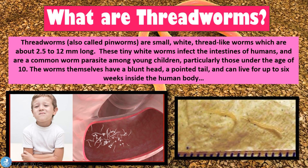So what are threadworms? Threadworms, which are also commonly known as pinworms, are small white thread-like worms about 2.5 to 12 millimeters long. These tiny white worms infect the intestines of humans and are a common worm parasite among young kids, particularly those under the age of 10. The worms have a blunt head and a pointed tail and can live up to six weeks inside the human body. This is also commonly known as the human pinworm infection — a parasitic infection which usually affects children under the age of 10.